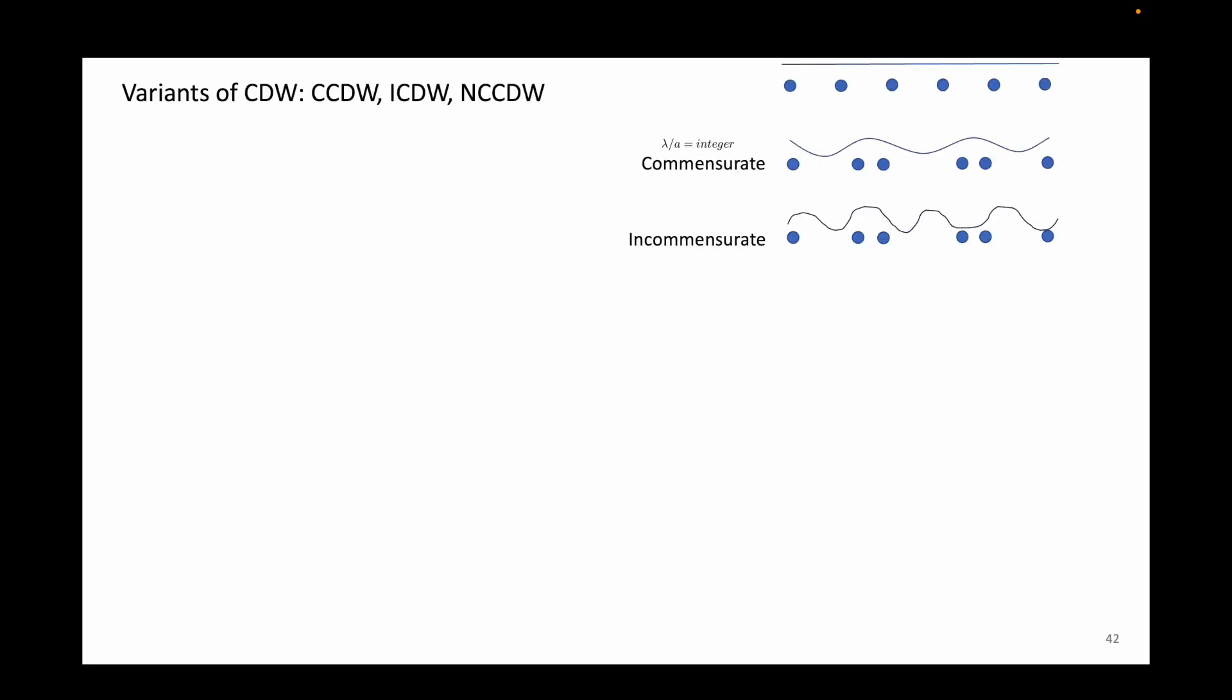First off, the charge density wave can itself be classified into several different categories. These are commensurate, nearly commensurate, and incommensurate charge density waves.